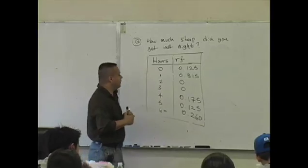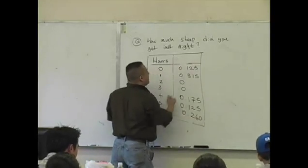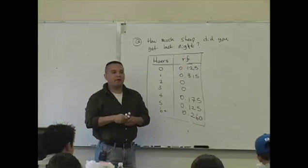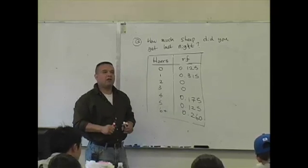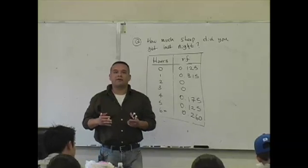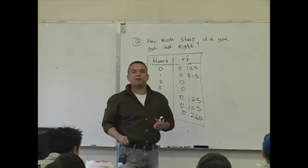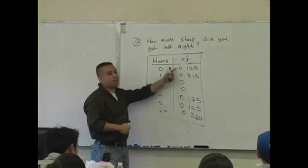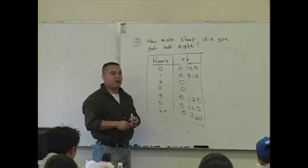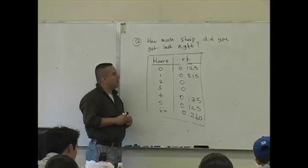This is a relative frequency table, and what we could have done is gather data and convert it to a relative frequency. The point is, this is what's known as real-life probability — because there's nothing inherent about a person that tells us how many hours they'll sleep. We can't look at someone and say they're going to sleep for two hours or five hours, so this is called real-life probability.